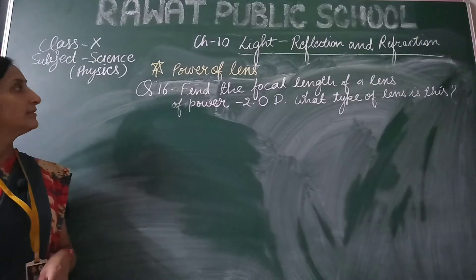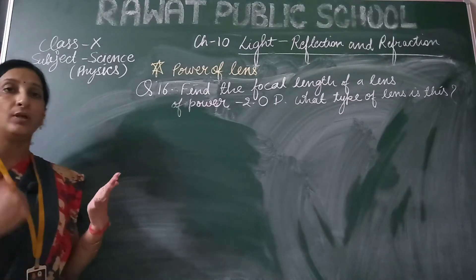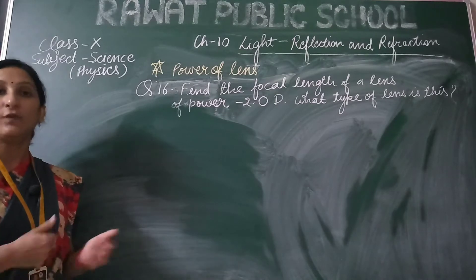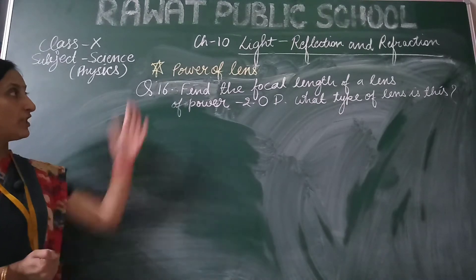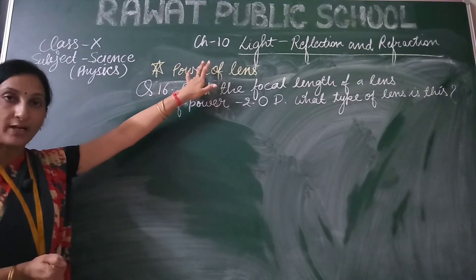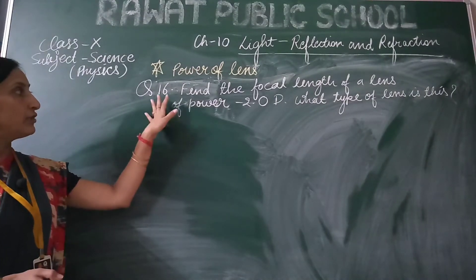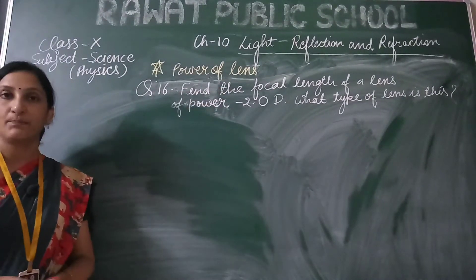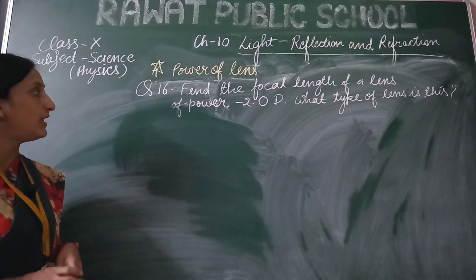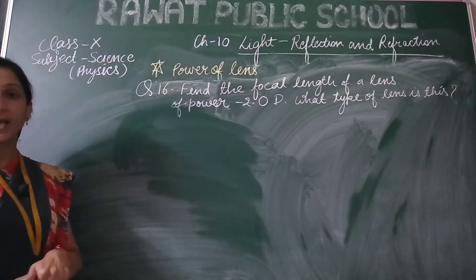Good morning students. In the previous lesson, I hope you understood the power of plants and the power of combination of lenses. Let's do numericals based on the power of lenses. The 16th exercise question is: find the focal length of a lens of power minus 2 diopter. What type of lens is this?